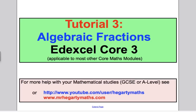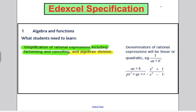Just to start, let's check what Edexcel says we need to know. In the previous two tutorials, we've done simplifying of rational expressions — factorising and cancelling — and we've added, subtracted, multiplied and divided rational expressions. Now we're going to do something called algebraic division. The denominator will be limited to a linear or quadratic, so the bottom can only be linear or quadratic.